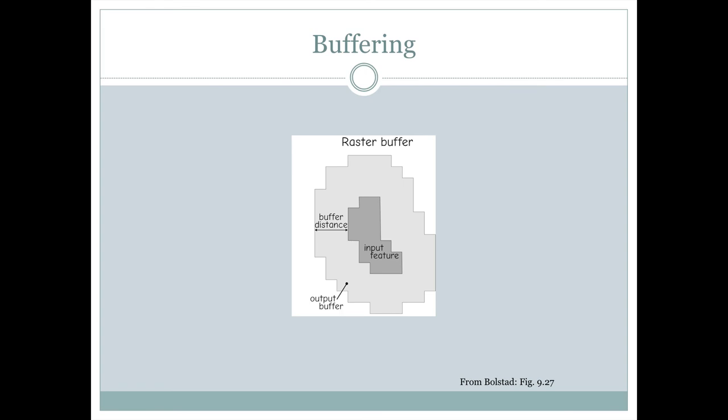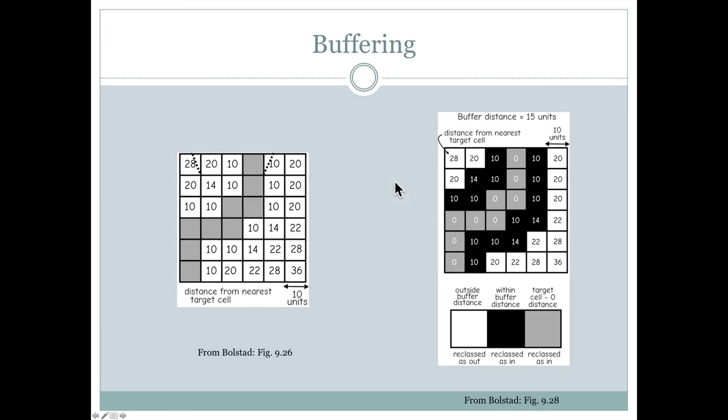We can also do buffering with raster data. With raster data, we just define a buffer distance. We start with some input features, which are just going to be some of the grid cells. The buffer distance is going to be related to the size of the grid cell. And then we'll get an output buffer. This is just going to be based on the distance each of the grid cells is away.